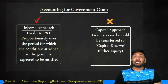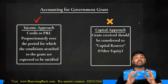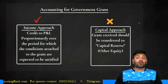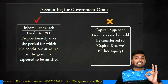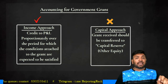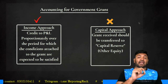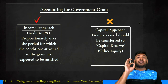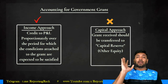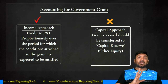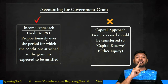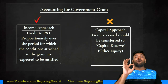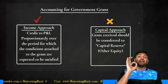There are two types of accounting approaches for government grants, but Ind AS 20 recognizes only one — the income approach. According to the income approach, any government grant received should be transferred to P&L proportionately over the period for which the conditions attached to the grant are expected to be satisfied. For example, if conditions must be met for 10 years, allocate the grant to the credit of P&L proportionately over those 10 years.